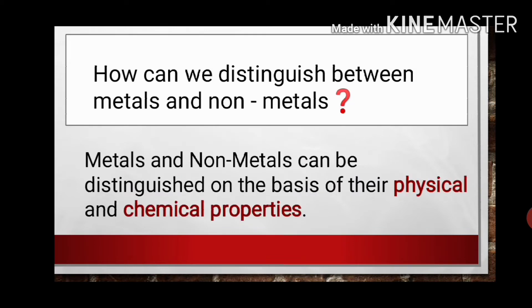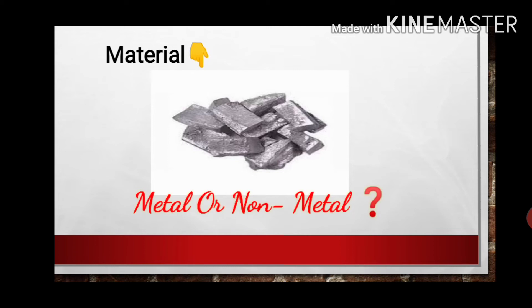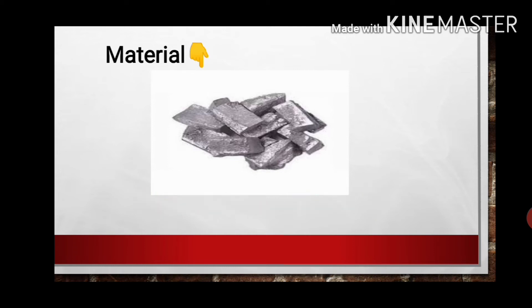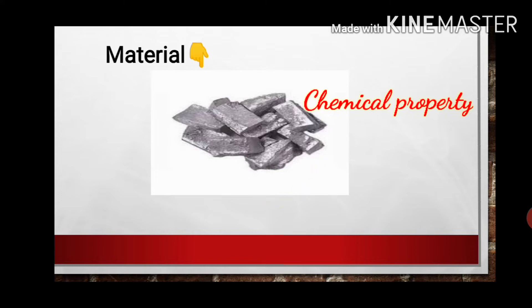The most important question is: how can you distinguish between metals and non-metals? If a material is given, how can you identify whether it is a metal or a non-metal? Metals and non-metals can be distinguished on the basis of their physical and chemical properties. By looking at the physical and chemical properties of a given material, you can identify whether it is metal or non-metal.